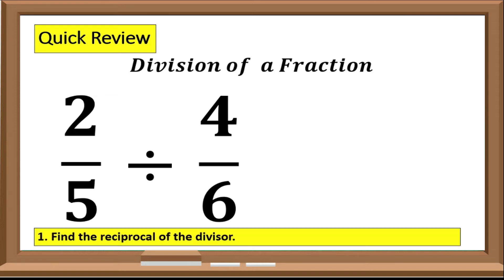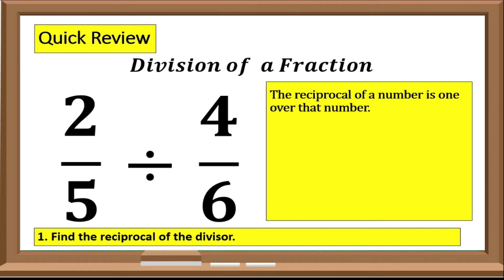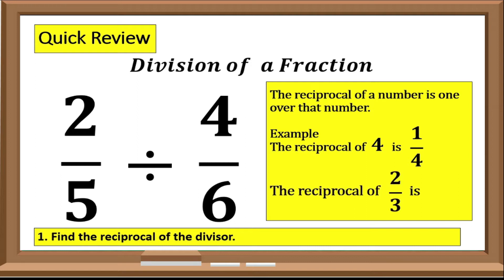Step 1: We need to find the reciprocal of the divisor. What is a reciprocal? The reciprocal of a number is 1 over that number. In short, you will just interchange the number in the numerator to the denominator. For example, the reciprocal of 4 is 1 over 4. The reciprocal of 2/3 is 1 over 2/3, or if we simplify, that is 3 over 2.